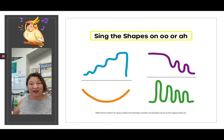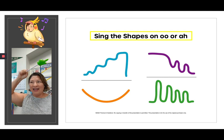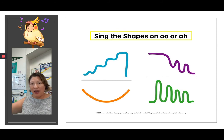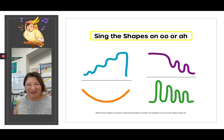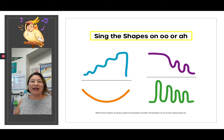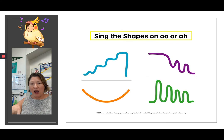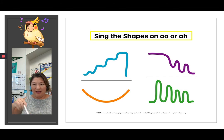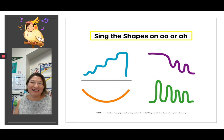Now here's the purple one. It starts high. Listen — I'm going to sing it on ooh and ah. So that was fun. Here's the orange shape that is just like a half moon. It starts high, goes low, and back to high. And here's the really fun one, the green shape. It starts low but it kind of swirls. Ready? Your turn.